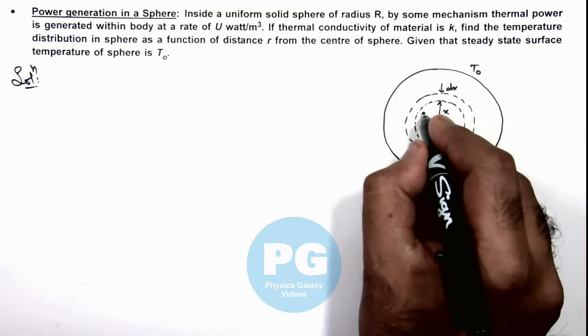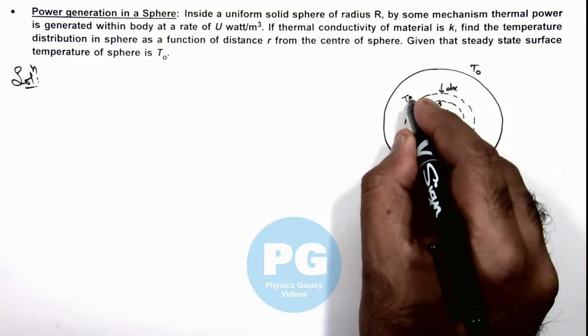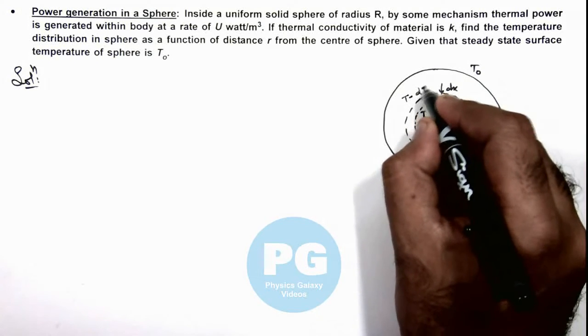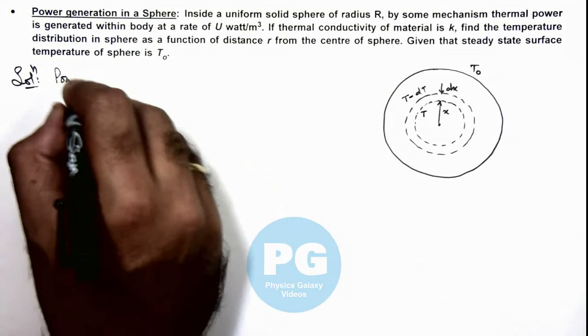And we can consider if here temperature is T, heat is flowing out, outside temperature of this elemental shell will be T minus dT. So in this situation first we can calculate the power generated.